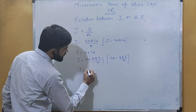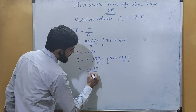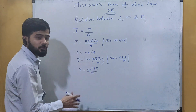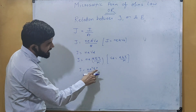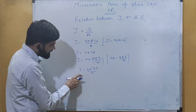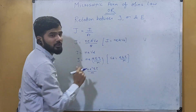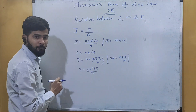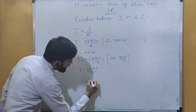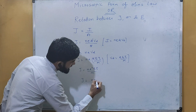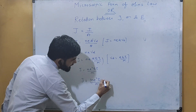Substituting, we get j equals n·e·(e·E·τ/m), which gives j equals n·e²·E·τ divided by m. We can rearrange this as j equals (n·e²·τ/m) multiplied by E. We have j and E, but we still need to introduce sigma.